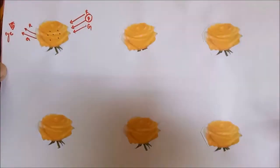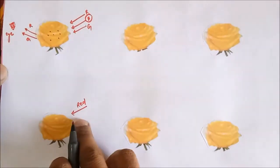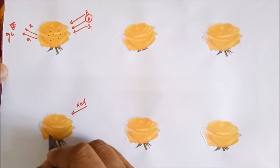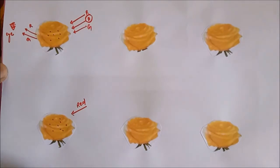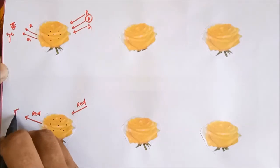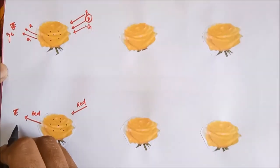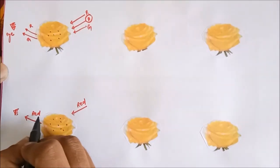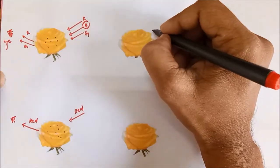Now let's impart red color light on it. This red color light is not going to get absorbed by the pigments of the yellow flower, so red is entirely going to get reflected and reaches our eye. So we see the yellow rose as red in red light.